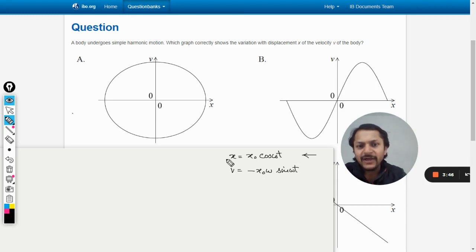I know calculus, that is why I can just do it in my mind. If you do not know calculus, these two formulas are available in your data booklet in topic 9.1. So you can copy these things from 9.1. Now we know that X is a variable with cos and V is a variable with sine but with a negative sign.